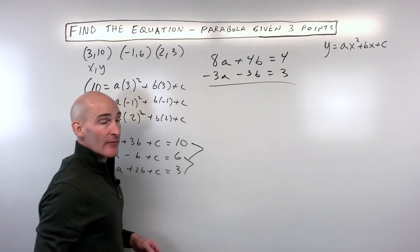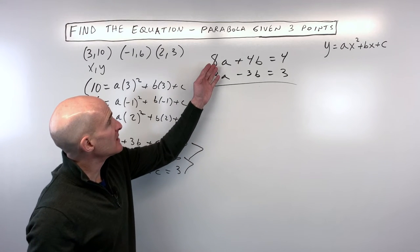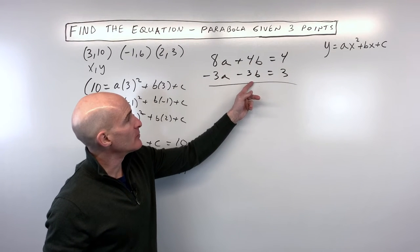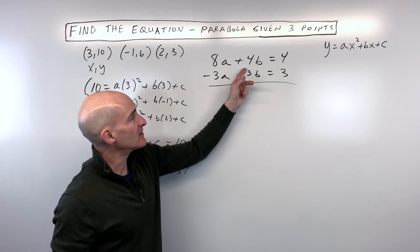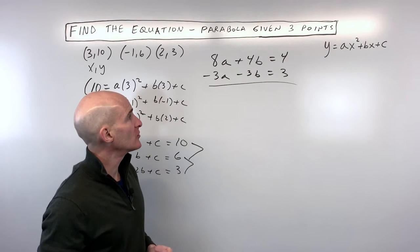Okay so now look what we have. We have two variables, two equations. We can solve this system. We need to either eliminate the a's or the b's. I'm going to eliminate the b's and what we need to do is find the lowest common multiple for 4 and 3. So what do 4 and 3 both go into? 12.